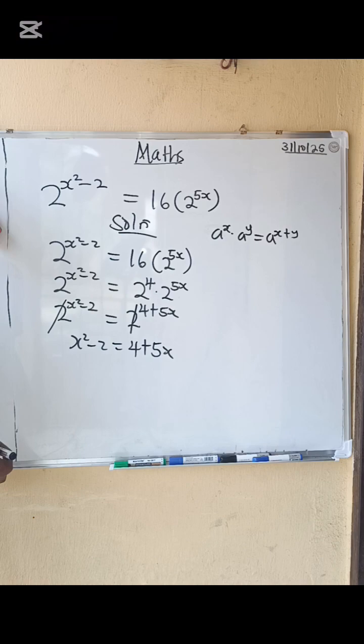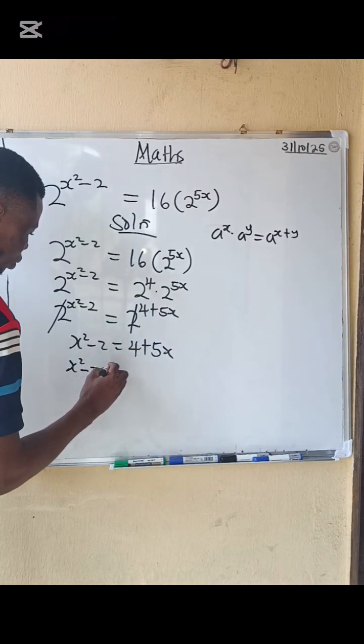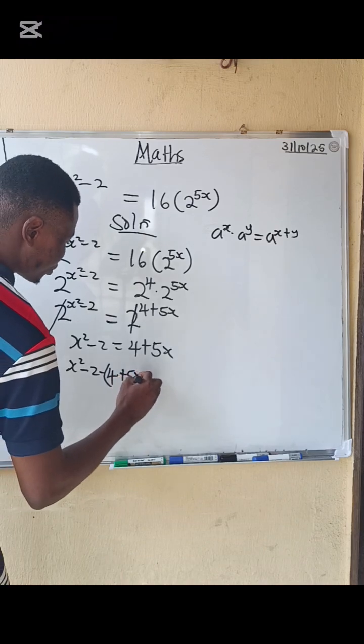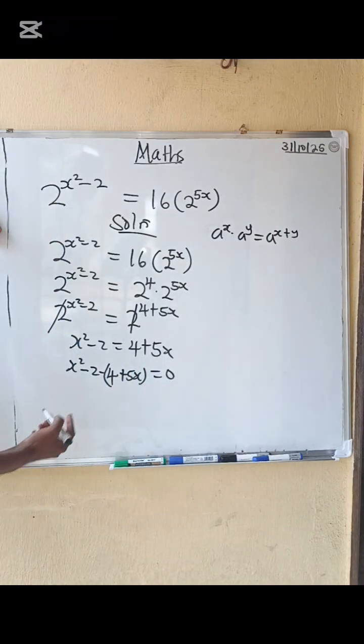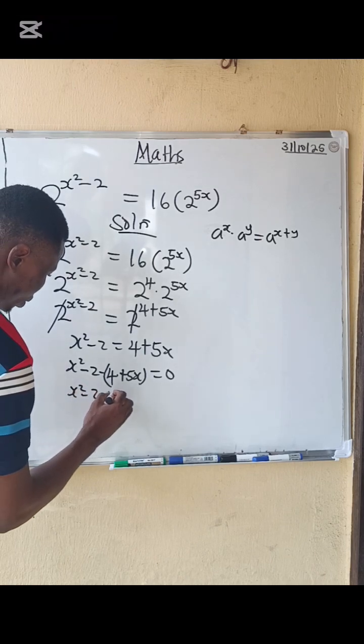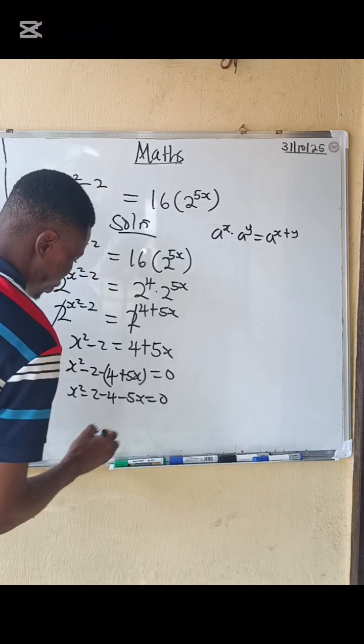What next do we do? We equate to 0. So x squared minus 2 minus 4 minus 5x equals to 0. Let's open the bracket. You have x squared minus 2 minus 4 minus 5x equals to 0.